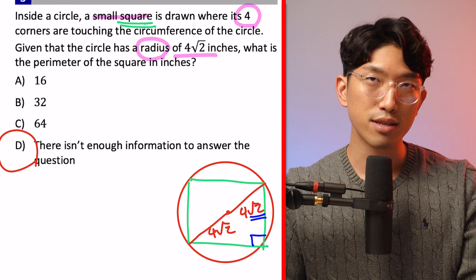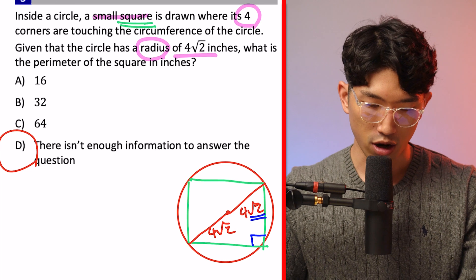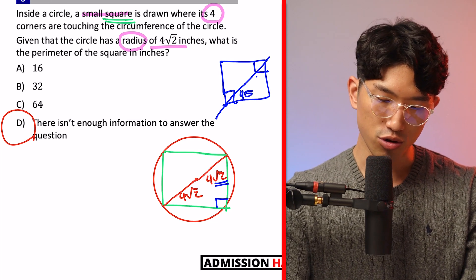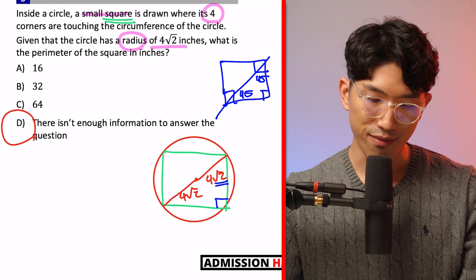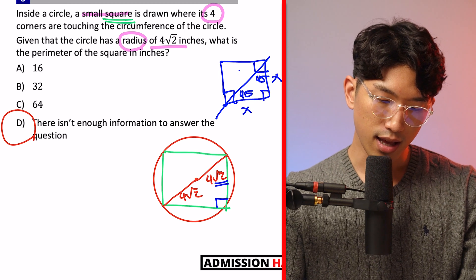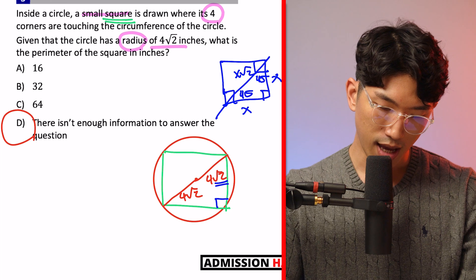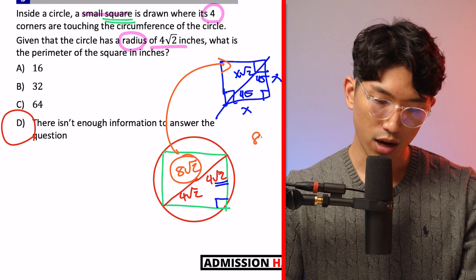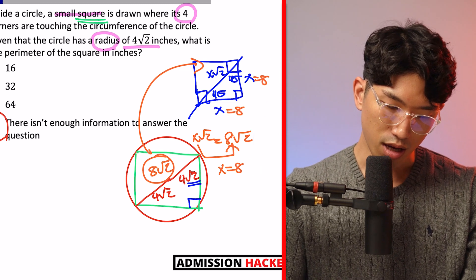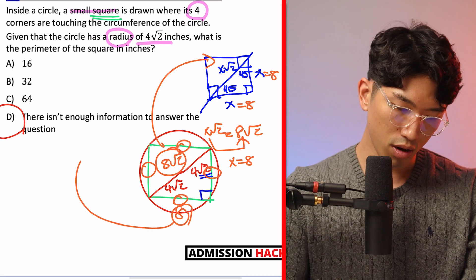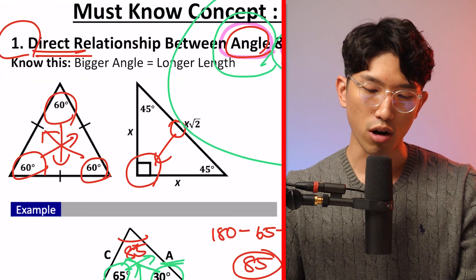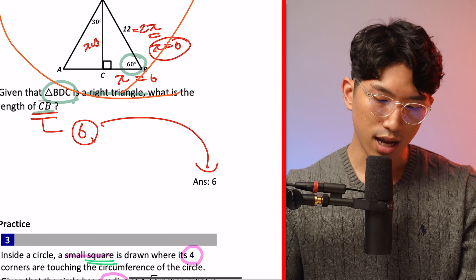A square has 90° corners, and if we draw a diagonal across it, it splits the right angle into two 45° angles — giving us a 45-45-90 triangle. The side length ratio is X, X, and X√2. The diameter of the circle is 2 × 4√2 = 8√2, which serves as the hypotenuse. Since X√2 = 8√2, we get X = 8. All four sides of the square equal 8, so the perimeter is 8 × 4 = 32. This is how the SAT works: learn the concepts, piece them together, and apply them to the question.